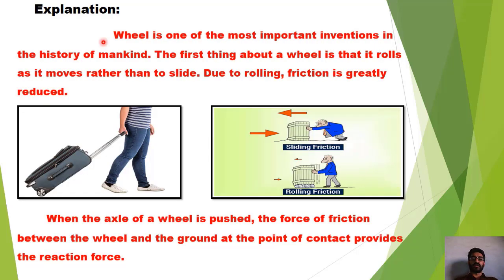Wheel انسانی تاریخ میں ایک اہم ترین invention تھی۔ Wheel کے ایجاد ہونے سے پہلے جب ہم نے کسی body کو کسی دوسری جگہ transfer کرنا ہوتا تھا تو ہم اس body کو surface کی اوپر drag کرتے تھے اور اس drag کرنے کے نتیجے میں بہت زیادہ force لگانی پڑتی تھی۔ Sliding friction کے بارے میں آپ نے پڑھا ہوگا کہ جب ہم کسی body کو دوسری surface کی اوپر slide کرواتے ہیں تو جو opposing force produce ہوتی ہے اسے sliding friction کا نام دیتے ہیں۔ اور sliding friction، rolling friction سے زیادہ ہوتی ہے۔